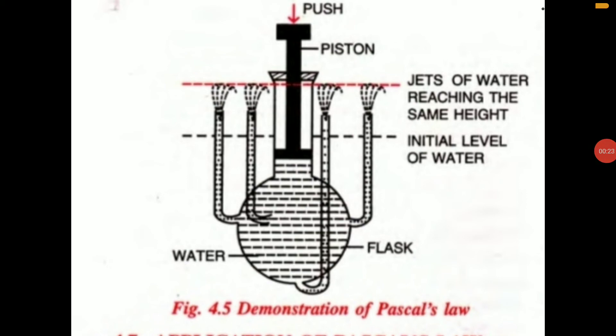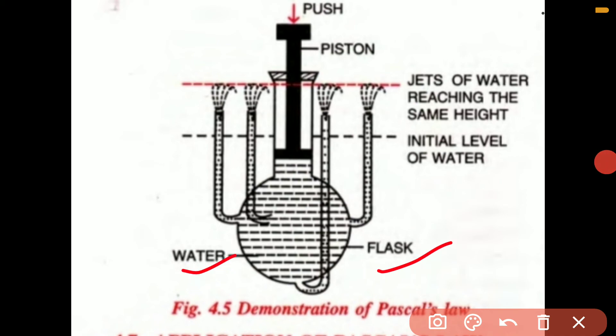This is a flask filled with water, where we have 4 tubes coming out of it from different places. It is provided with a movable piston here. If you push this piston down, pressure will be exerted on the liquid. Under this initial scenario, the water in each tube will be at the same level.